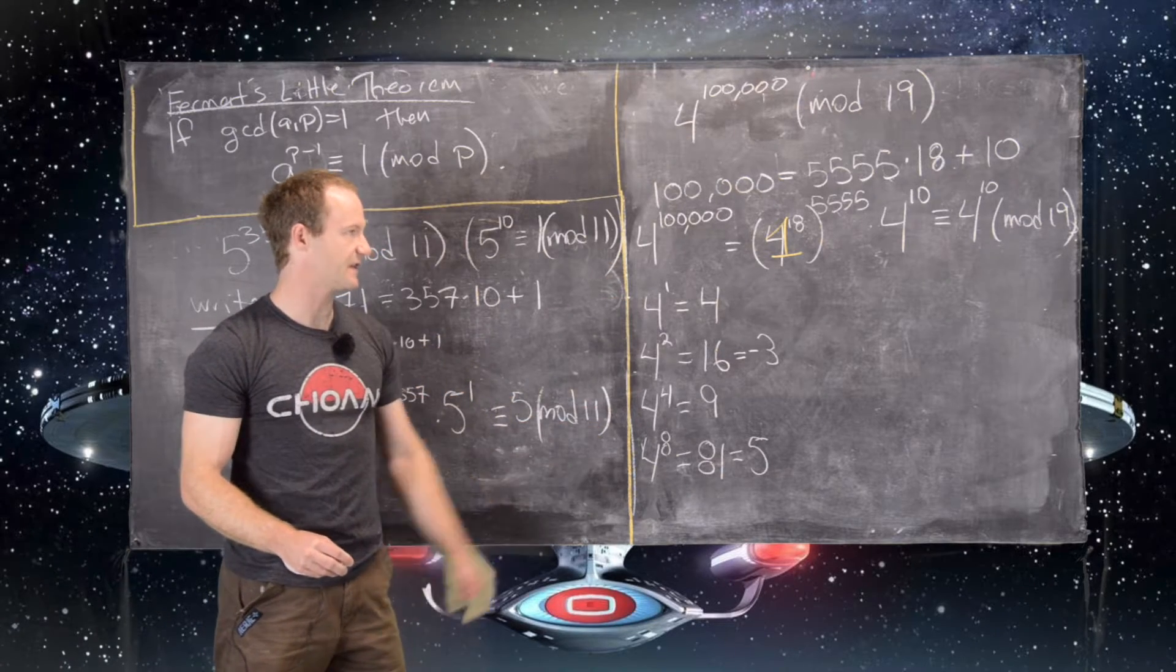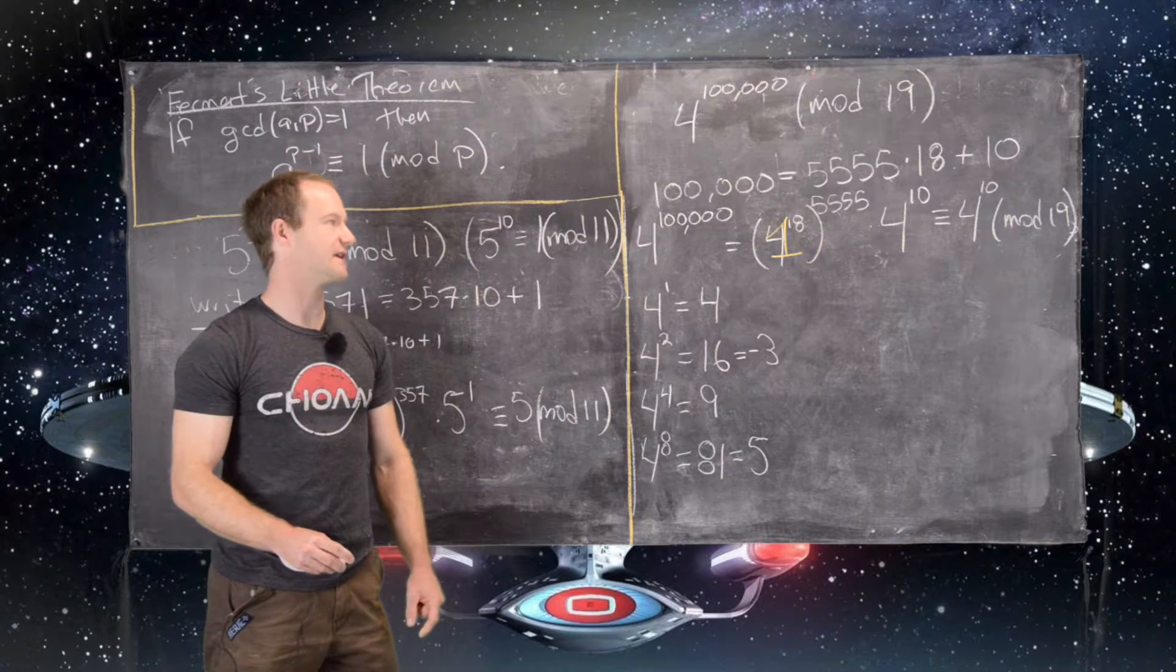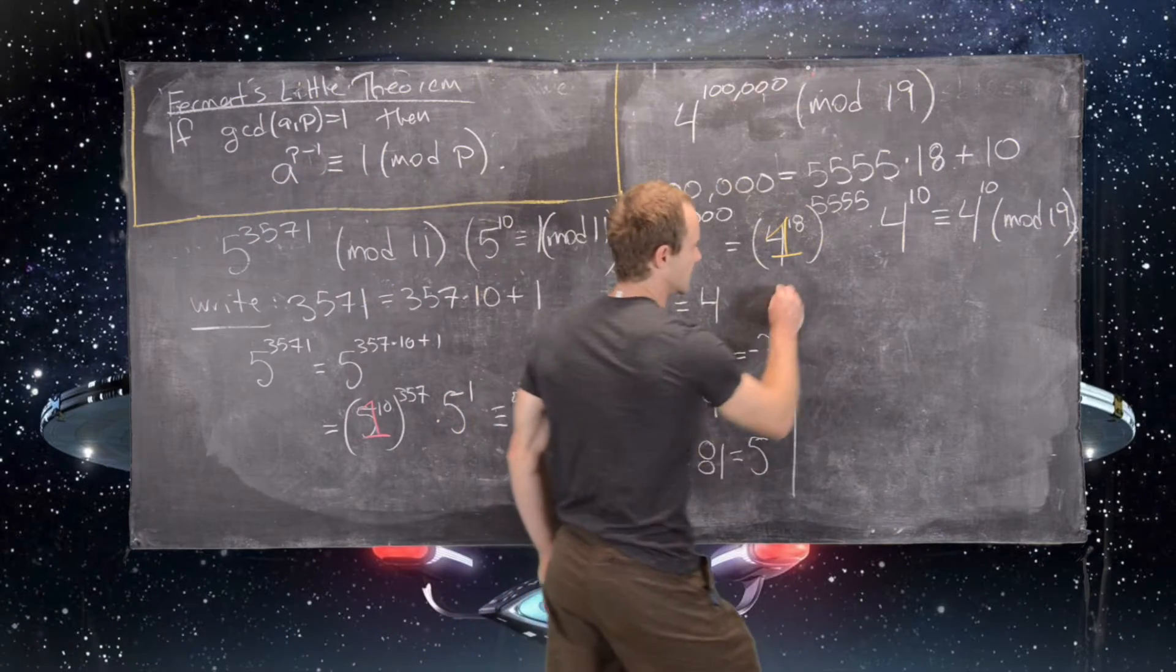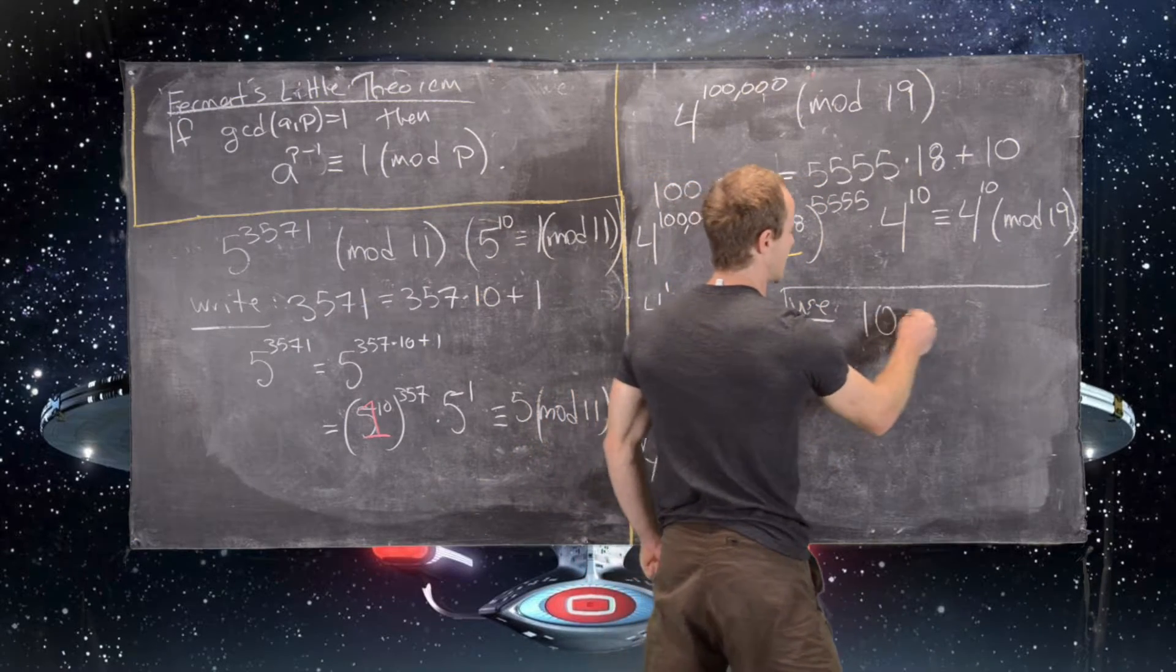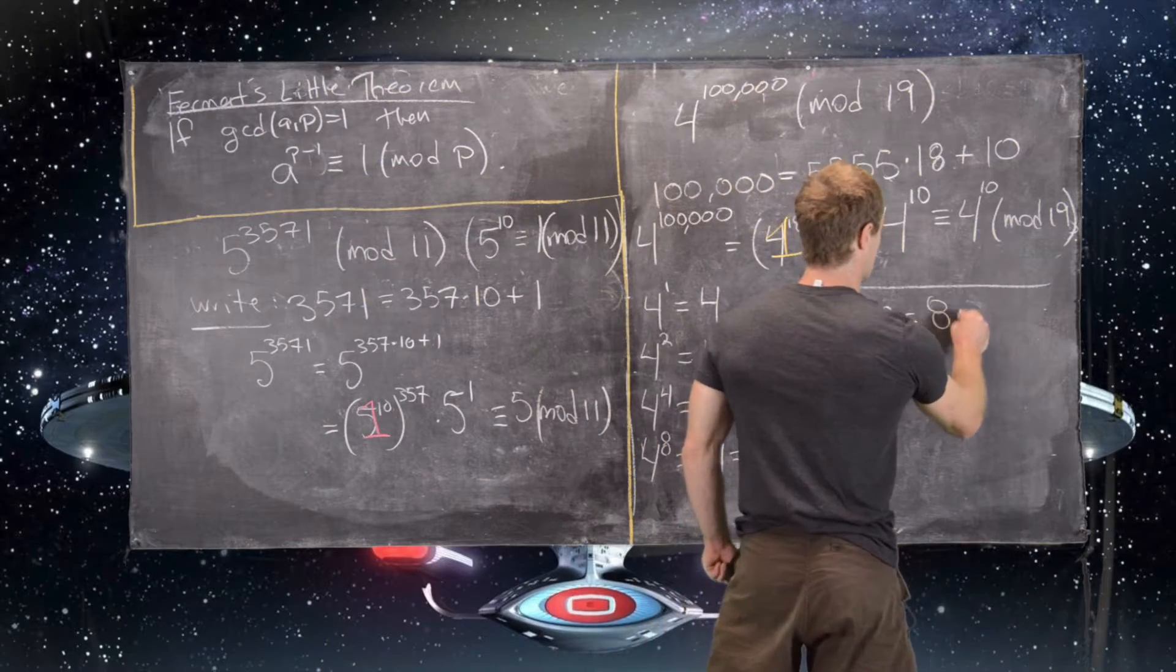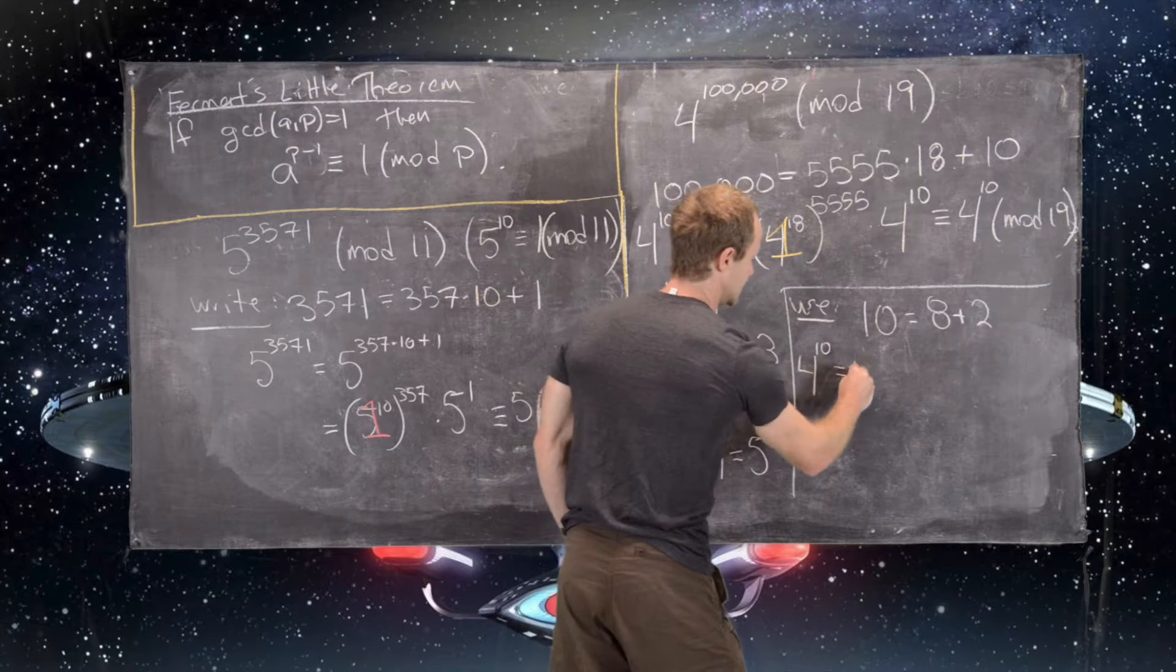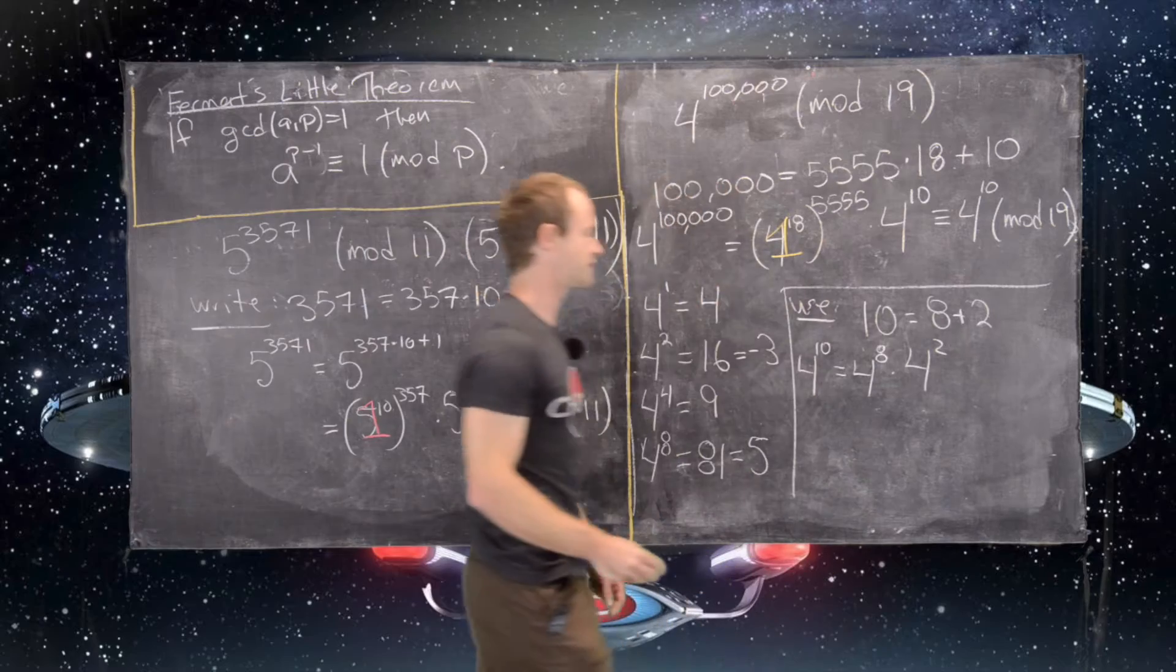So we did this method of successive squaring, and then now we'll use the fact that every number has a binary representation. So in other words, we'll use the fact that 10 can be written as a sum of powers of 2. It is 8 plus 2, which tells us that 4 to the 10 is equal to 4 to the 8 times 4 squared.